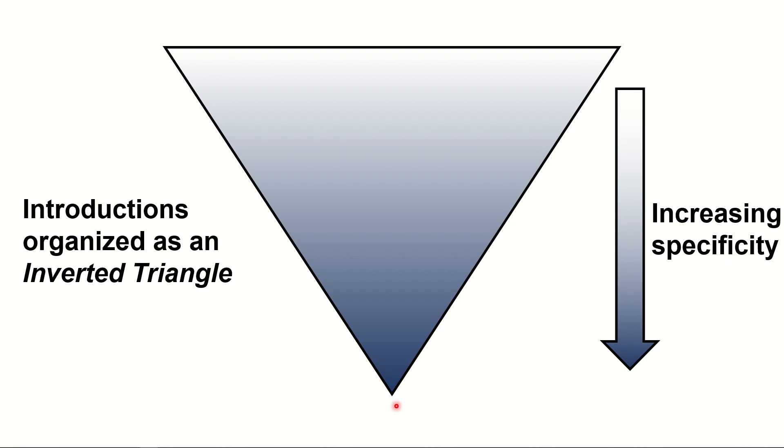What we're depicting here with this inverted triangle is how specific the information is. We start with broad information, which in a paper would be the broad relevance of the study. This may be some sort of way to get the reader's attention—maybe an environmental problem or a human health problem or some other problem that you tie the significance of your study into.